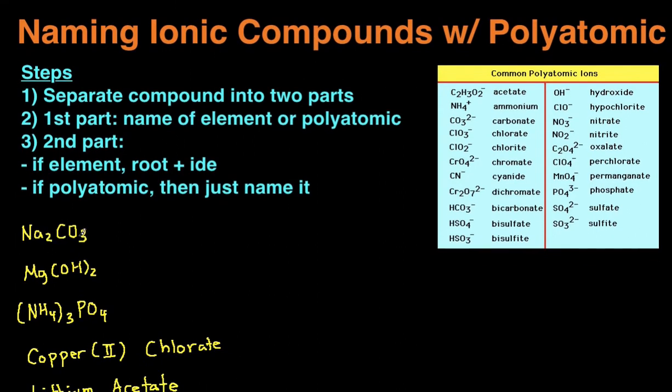So for example, Na2CO3, the first step is to separate the compound into two parts. This is where it's very important that you at least recognize which of these are polyatomic ions. So when you look at this, you should be able to separate this into Na and then CO3, with CO3 being your polyatomic ion. So in the first part, you just name that element or the polyatomic ion. So the first part's Na, which is just sodium.